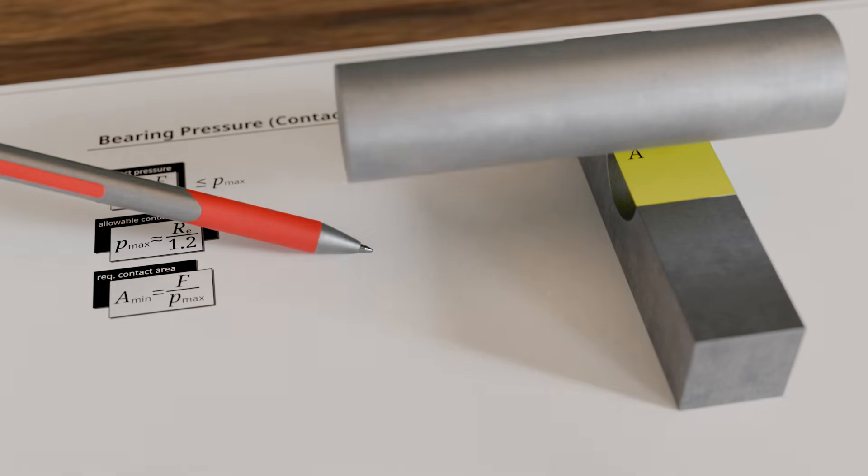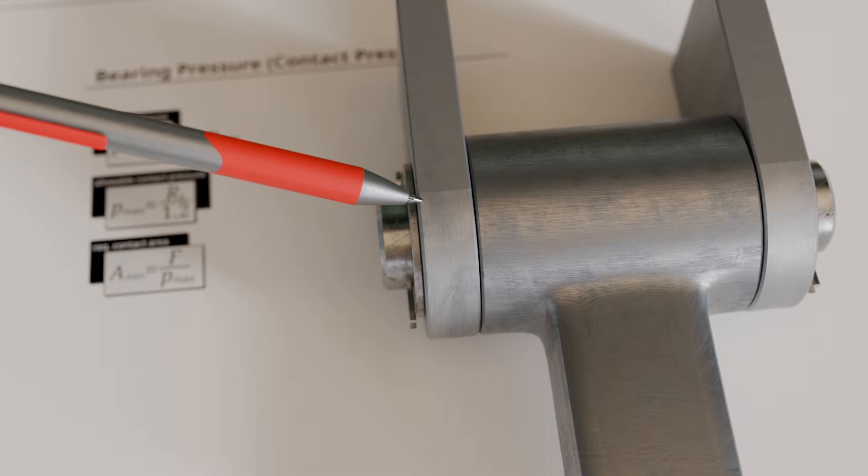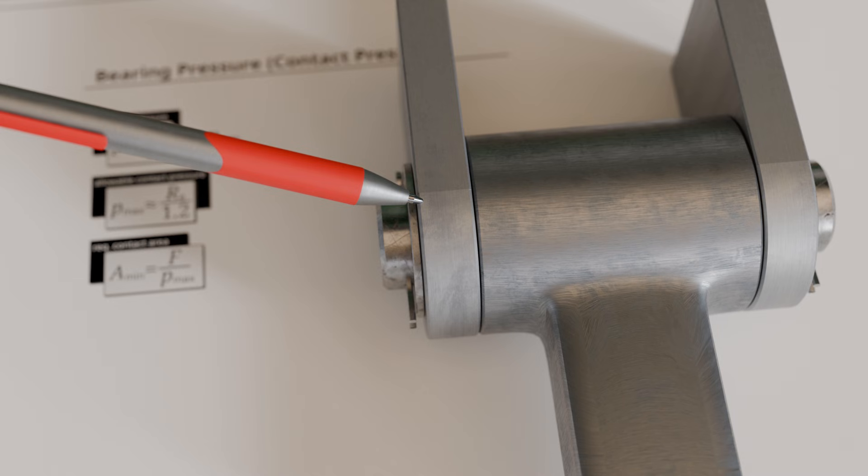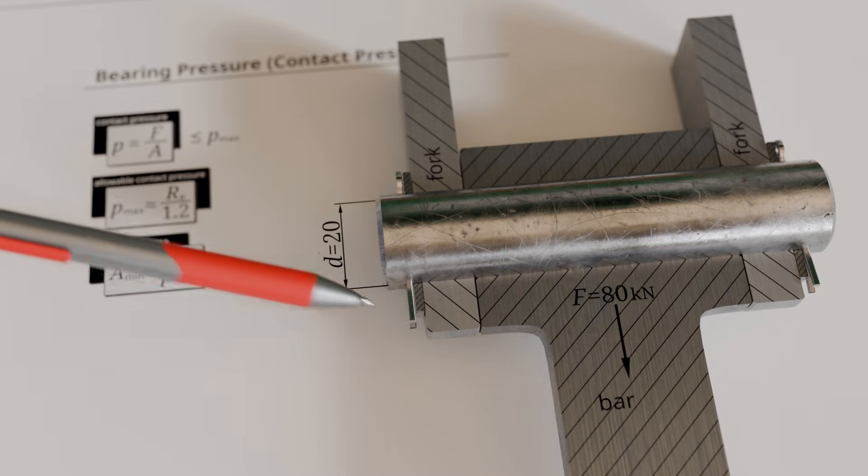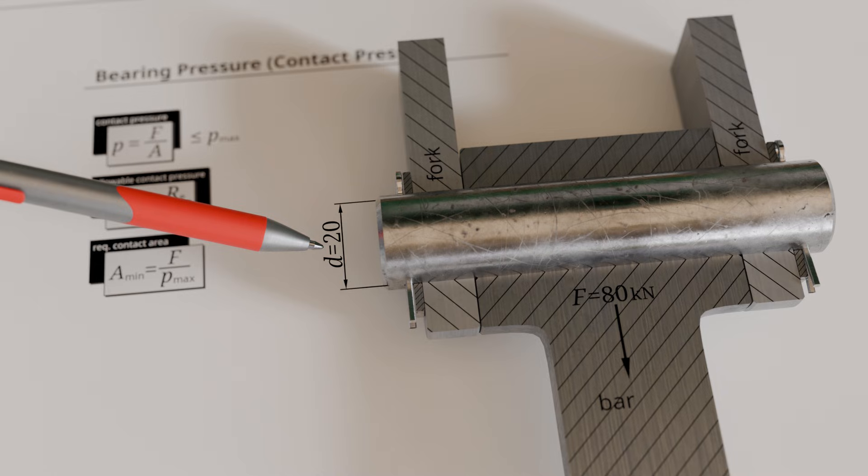Let us also consider an example for this case. A rod is attached between the two forks of a clevis using a pin. The rod is statically loaded with a force of 80 kilonewtons. The pin has a diameter of 20 millimeters and is subjected to bearing pressure by the clevis.